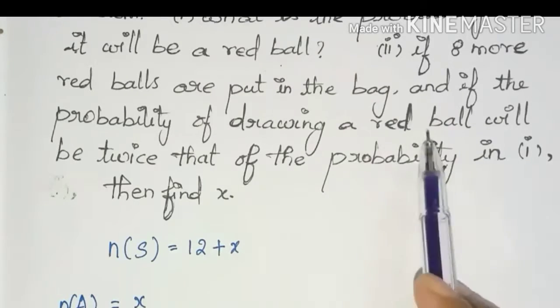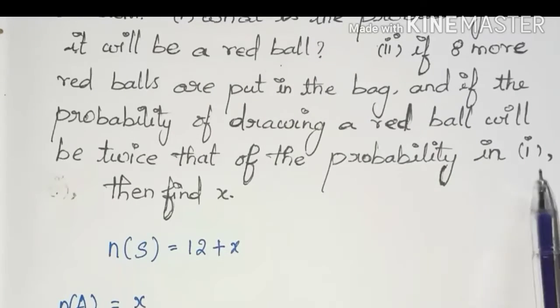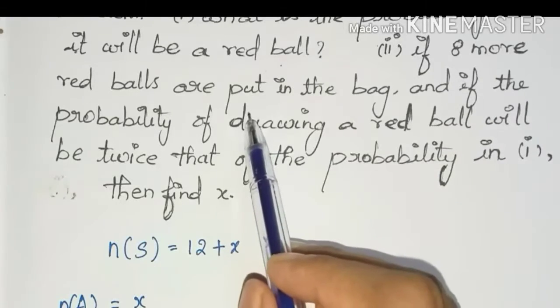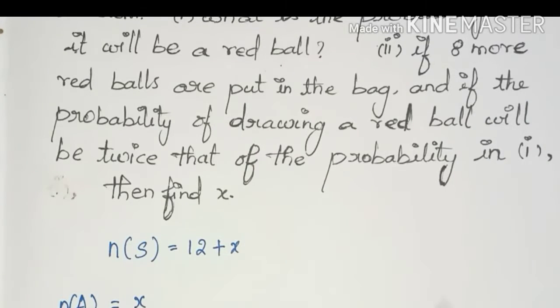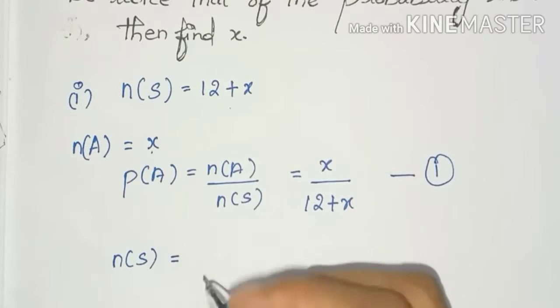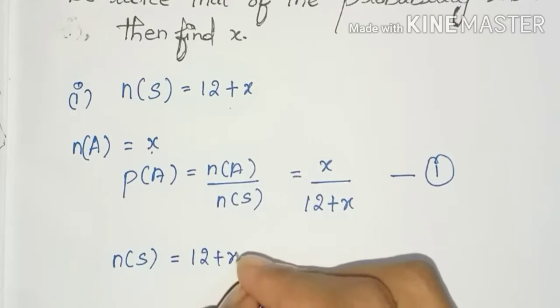For part two, if the probability of drawing a red ball will be twice that of the probability in part one, eight more red balls are added to the bag. The new sample space n(S) is equal to 12 plus x plus 8.